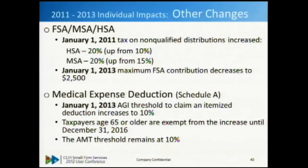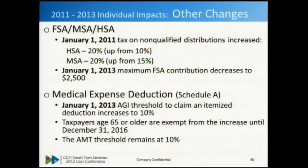Medical expense deduction on Schedule A: as of January 2013, the threshold increases from 7.5% to 10%. Exception: taxpayers age 65 or older are exempt from the increase until after December 31, 2016. For a married filing joint return, it is based on the age of the oldest taxpayer as of the close of the tax year. Two things to note: the AMT threshold remains at 10%, and the definition of qualifying expenses does not change for Schedule A purposes.